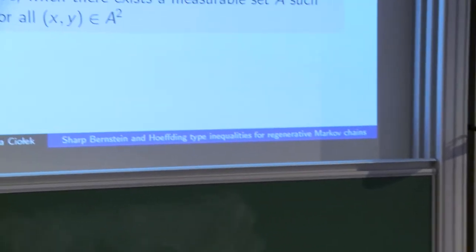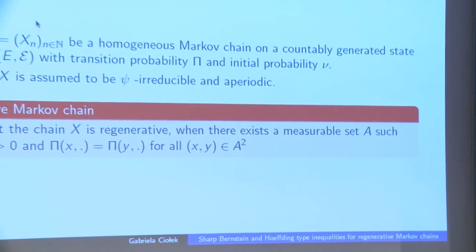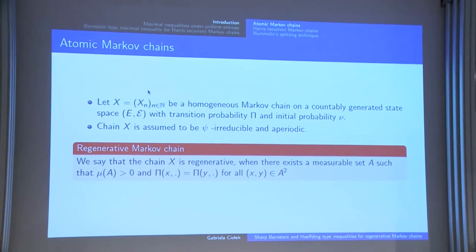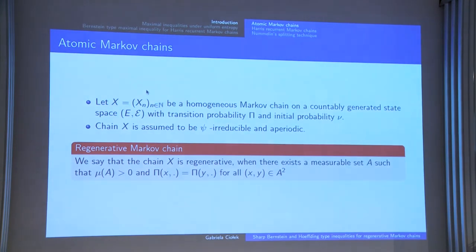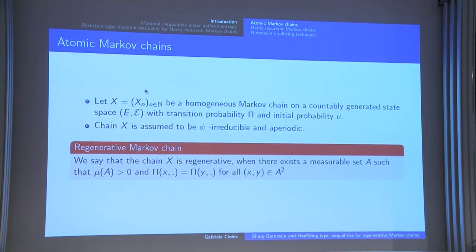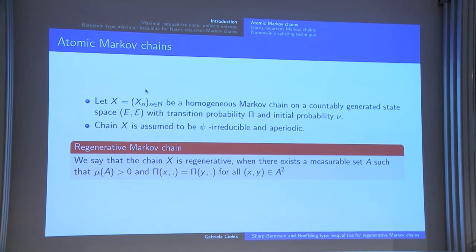I assume that X is a homogeneous Markov chain with transition probability Pi and initial probability V. I also assume that X is Phi-irreducible and aperiodic. We are interested in the atomic structure of the chain. We say that X is regenerative or atomic when there exists a measurable set A such that all transition probabilities from that set are the same. So whenever the chain hits this regeneration set, it forgets its past and regenerates itself.